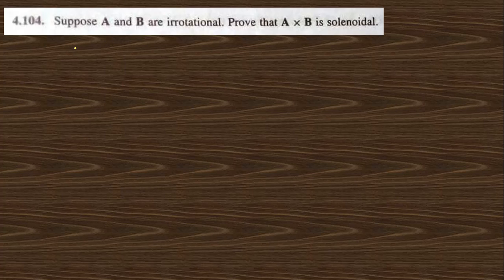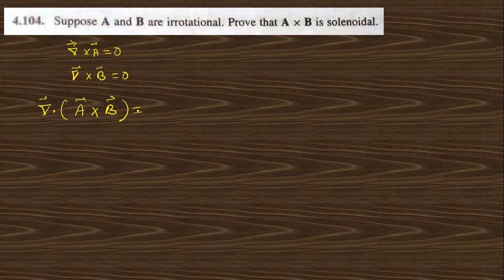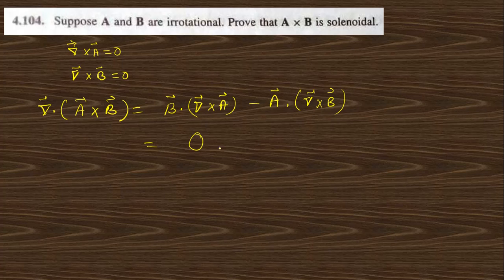Going to the next question, 4.104: suppose a and b are irrotational. That means curl a = 0 and curl b = 0. We need to prove that a × b is solenoidal, i.e., div(a × b) = 0. Using the identity div(a × b) = b · curl a − a · curl b, and substituting curl a = 0 and curl b = 0, we get div(a × b) = 0. Therefore, a × b is solenoidal.